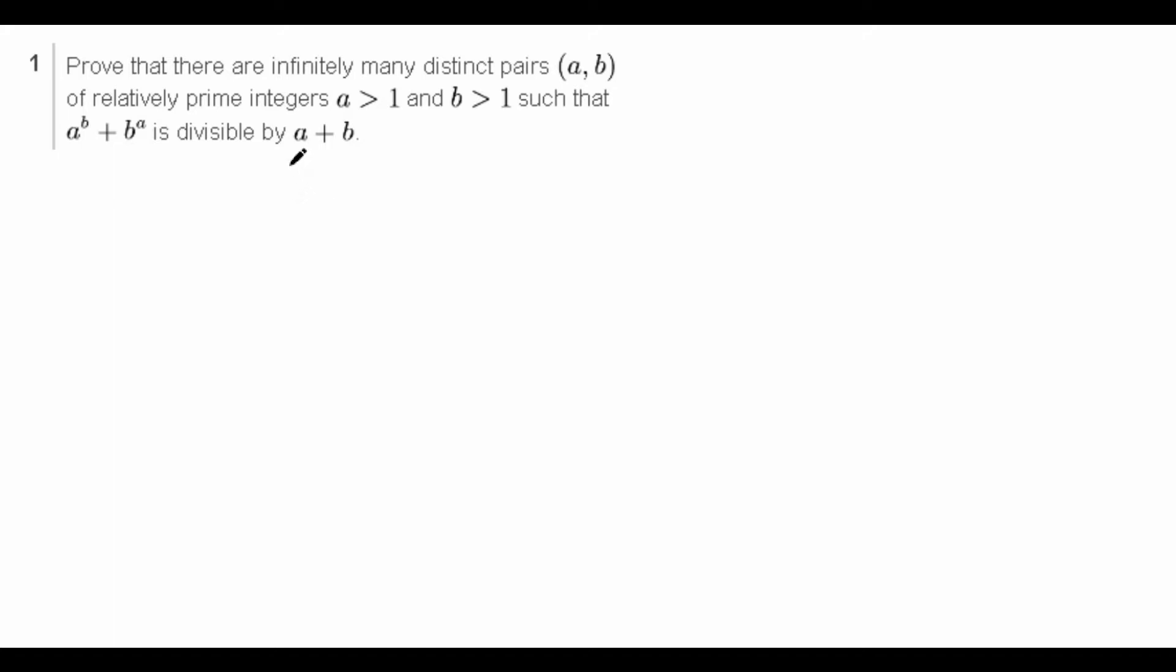Prove that there are infinitely many distinct pairs of relatively prime integers a > 1 and b > 1, such that a^b + b^a is divisible by a + b.